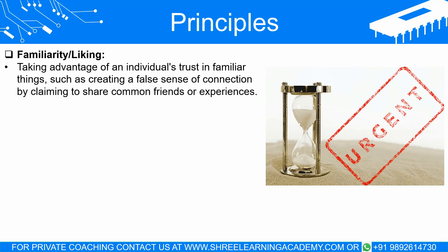Familiarity or Liking. The social engineering principle of familiarity or liking aims to take advantage of an individual's inherent trust in things that are familiar in order to manipulate them. In an attempt to deceive the target, the attacker frequently creates a false sense of familiarity or connection by claiming to share common friends or experiences, or adopts a false identity of a different person or organization. When a message appears to originate from a familiar source, such as a friend or the target's bank, the likelihood of the target trusting and taking action on the message's content significantly increases.